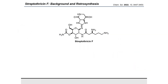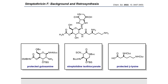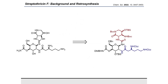When looking at Streptothricin F, there are two logical disconnections about the gulosamine sugar core that break this molecule into three fundamentally distinct moieties: the gulosamine sugar core, the streptolidine lactam, and the beta-lysine homopolymer. Viewing these fragments through the lens of a synthetic organic chemist, we arrive at a protected gulosamine core, a streptolidine isothiocyanate, and a protected beta-lysine as our three late-stage fragments. Retrosynthetically, we arrive at Streptothricin F through a Lewis acid-catalyzed guanidine closure of this thiourea followed by global stepwise deprotection.